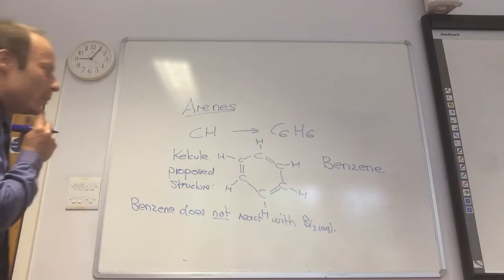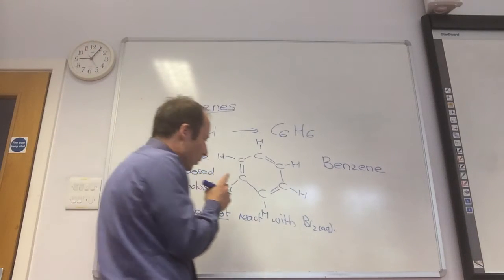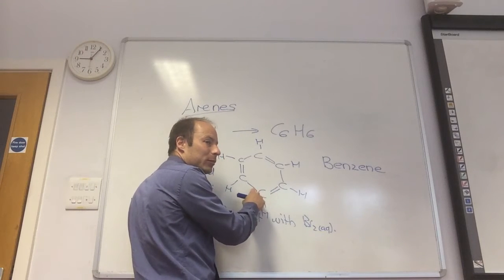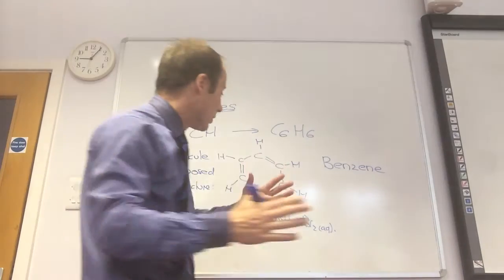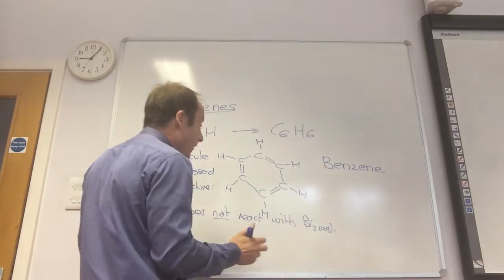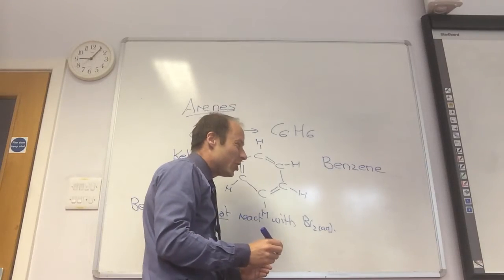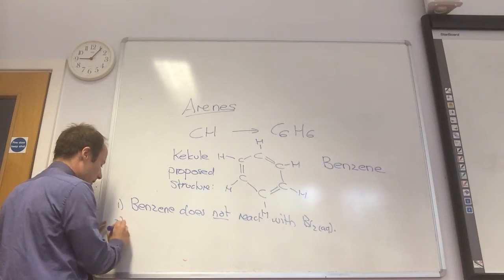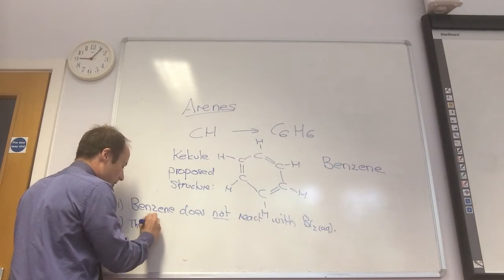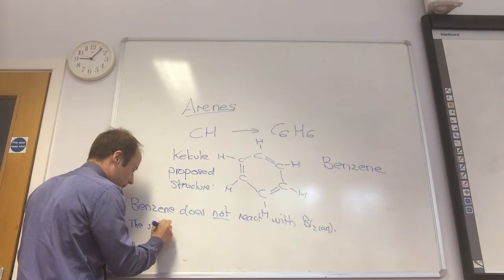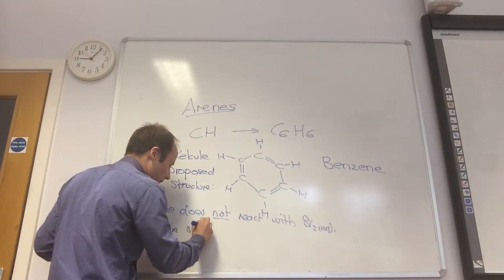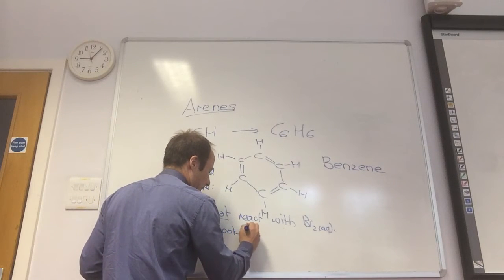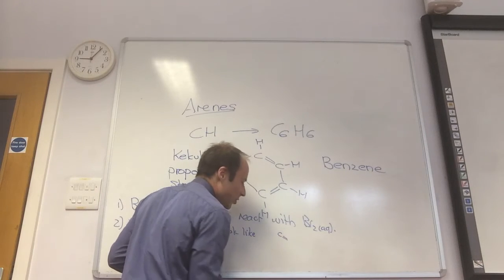So that's one of the problems that they came out with. The other problem was its shape. What do we know about the length of single and double bonds? Double shorter. Yeah, double shorter because it's stronger. So if I actually drew this out as it should, it should kind of look like this.